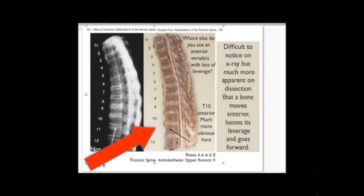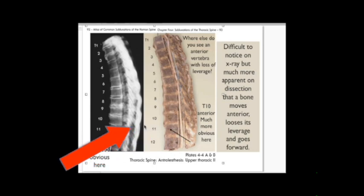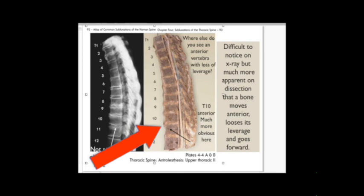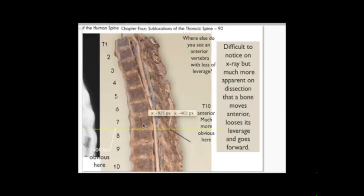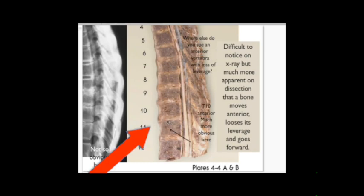If you take a look over here at the dissection, this is the same thing. This x-ray was taken and then the body was put on a bandsaw and they cut a section out. You can see the vertebra is anterior. Let me enlarge that for you. The vertebra has gone anterior, it's lost its leverage, and from that point it's stuck forward.